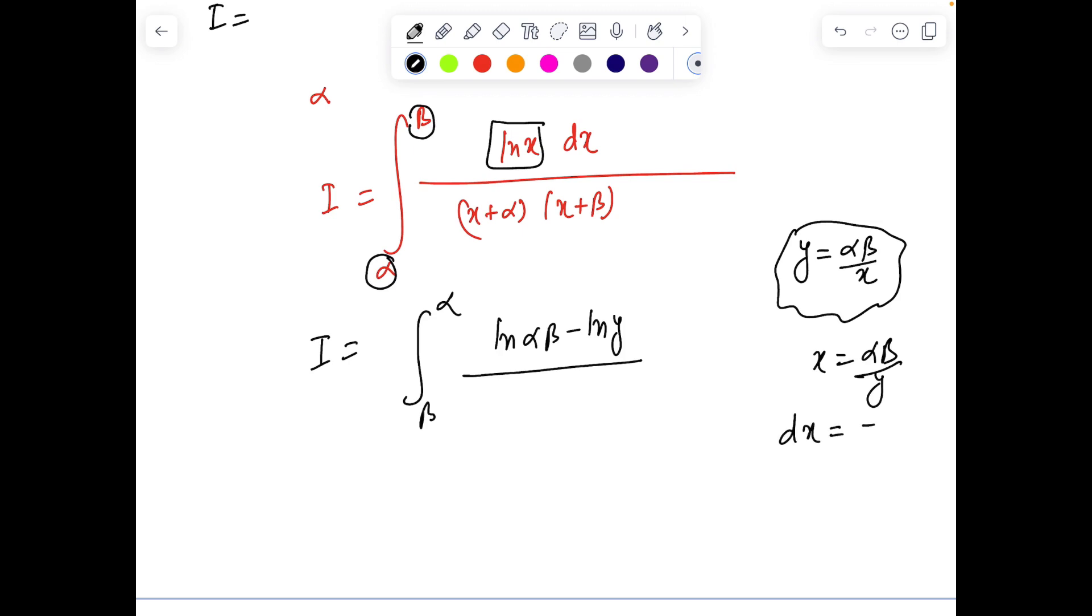dx is -αβ/y² dy. Let's substitute: dx = -αβ/y², x + α becomes αβ/y + α, and x + β becomes αβ/y + β.